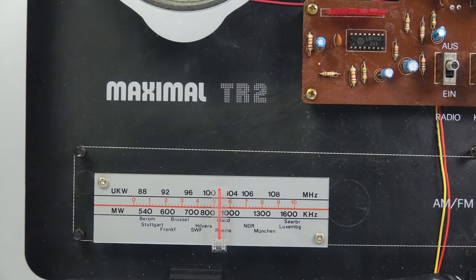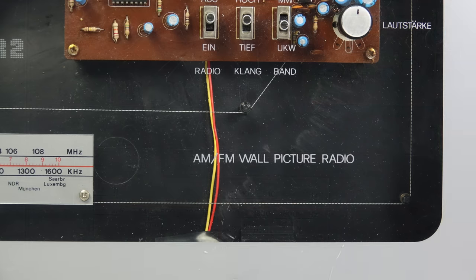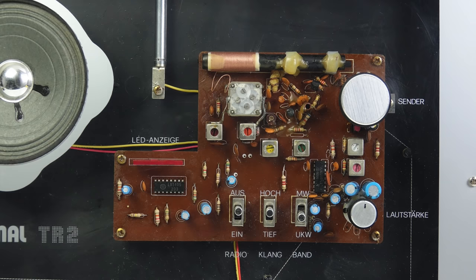The model is the Maximal TR2 and it's an AM FM mono radio. This one was manufactured for the German market which is where I imported mine from.